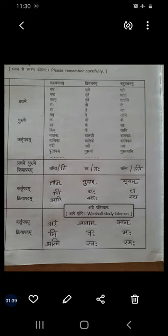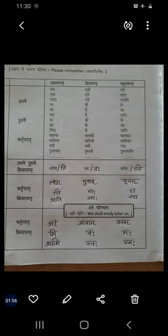Now, what do you mean by Prathampurush Kartrupadam? Kartrupadam means subject. Up to Kim, these are all called as pronouns. But Balakah, Balika, Nadi, Pustakam — these are all called as nouns. Pronouns are called Sarvanama in Sanskrit, whereas nouns are called Namapada or Sanjna.